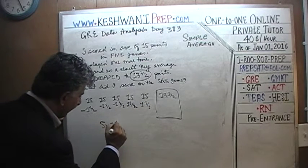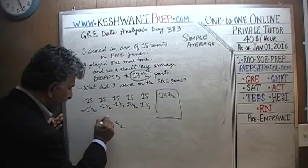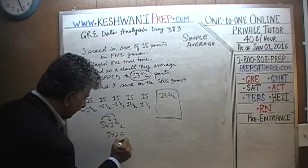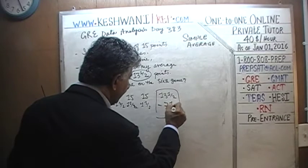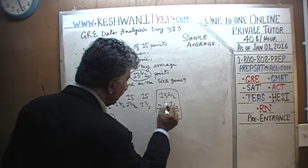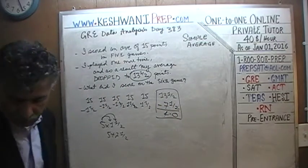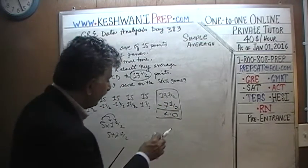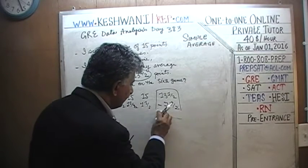Five times one and a half: five times one is five, and five halves is two and a half, so that's seven and a half. We need to take away seven and a half points from the last game's starting value of 13 and a half. Thirteen and a half minus seven and a half: 13 minus 7 is 6. So he must have scored 6 points in the last game.